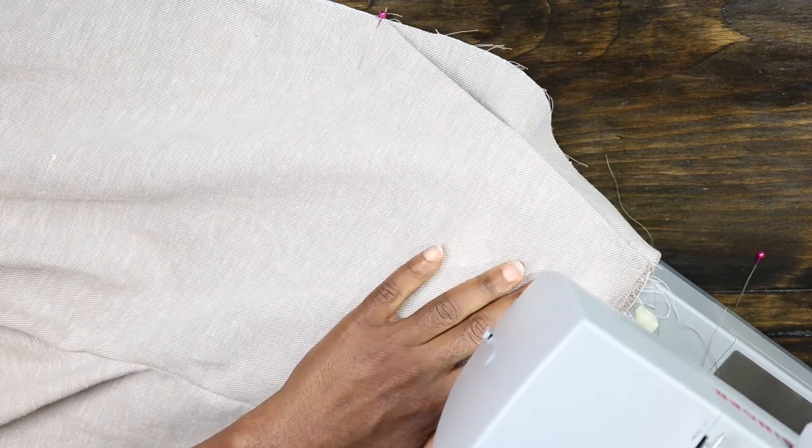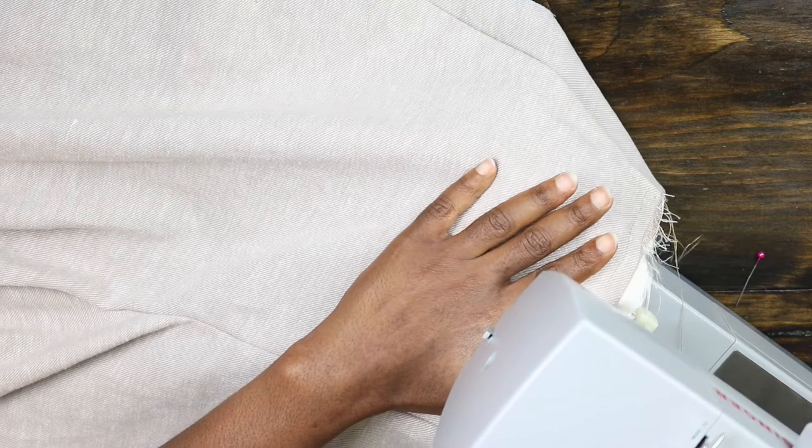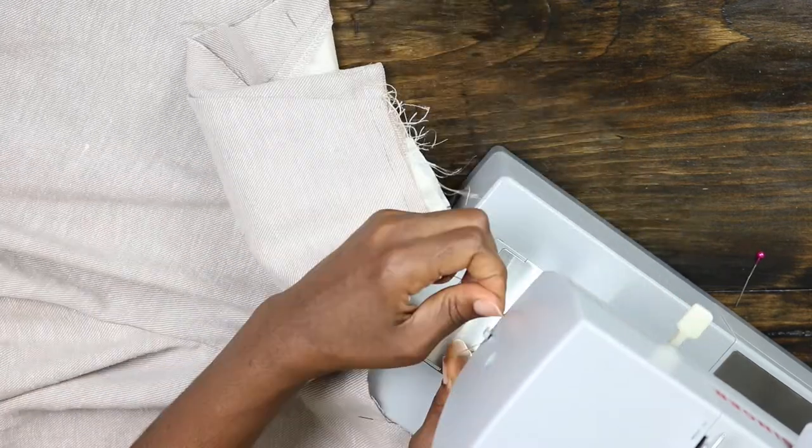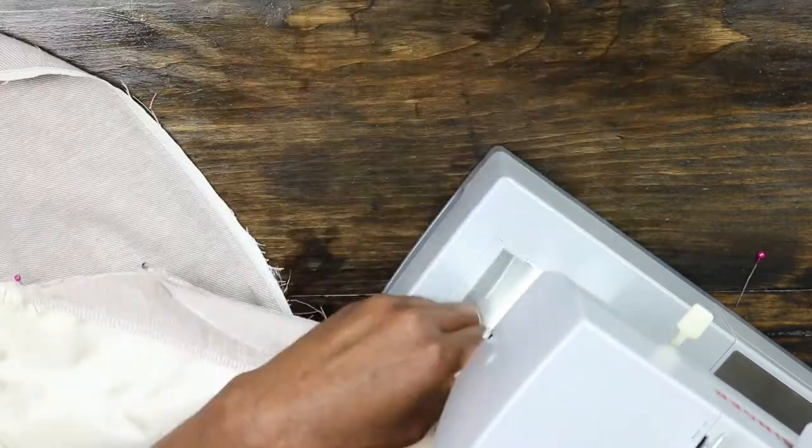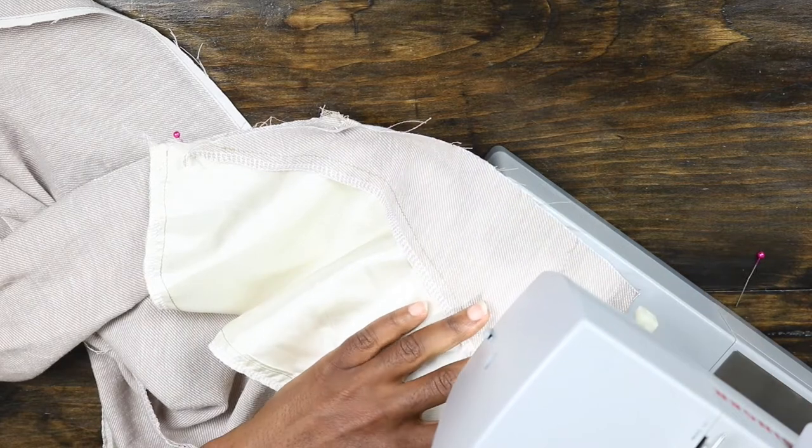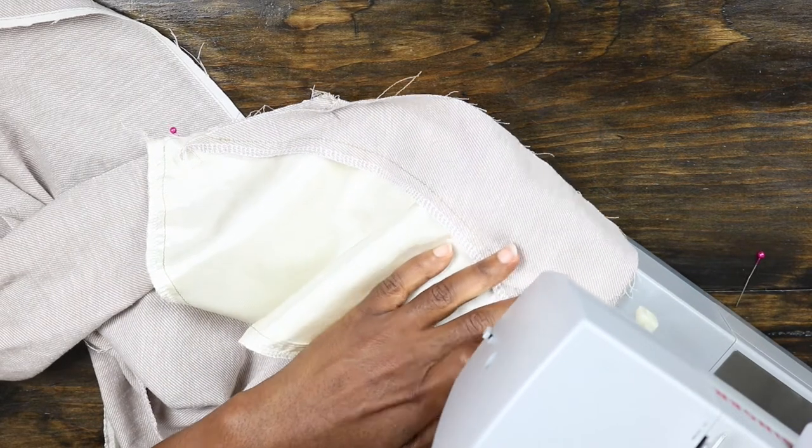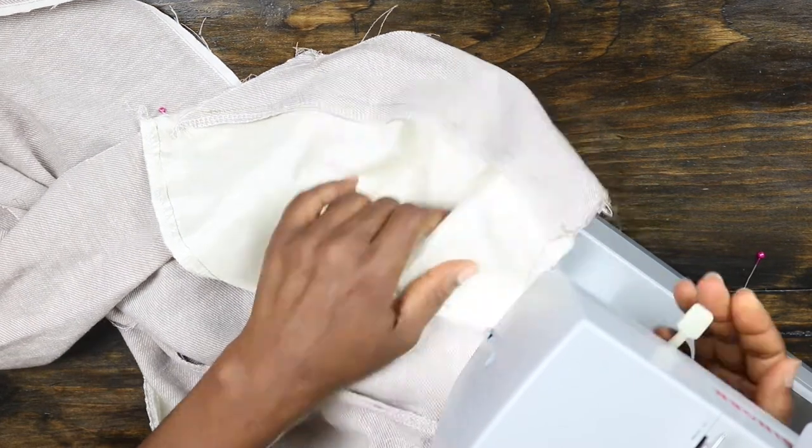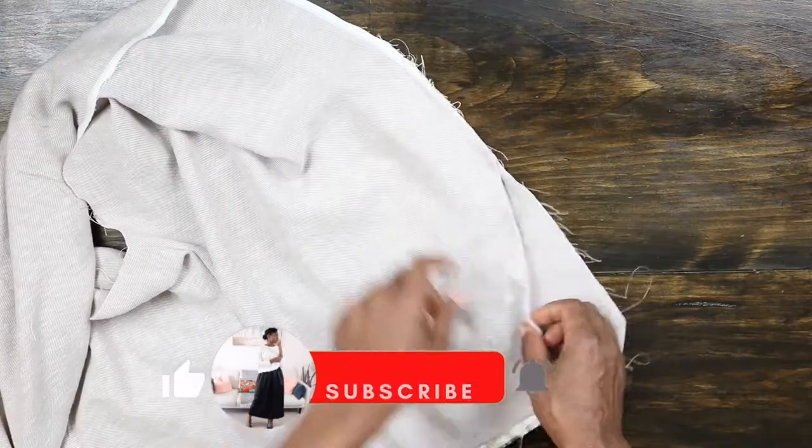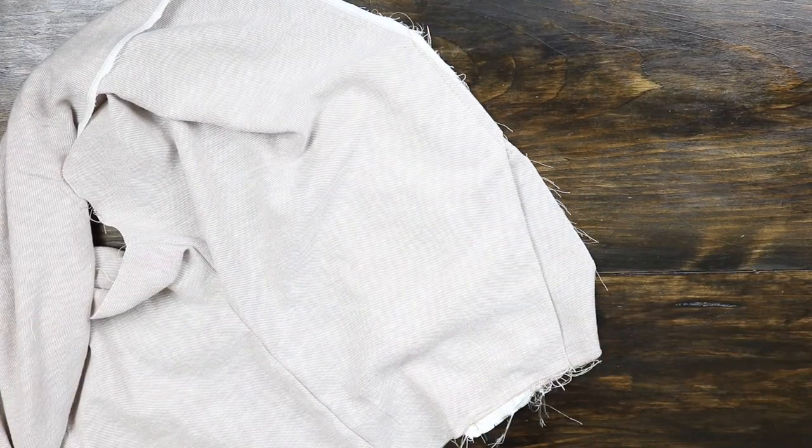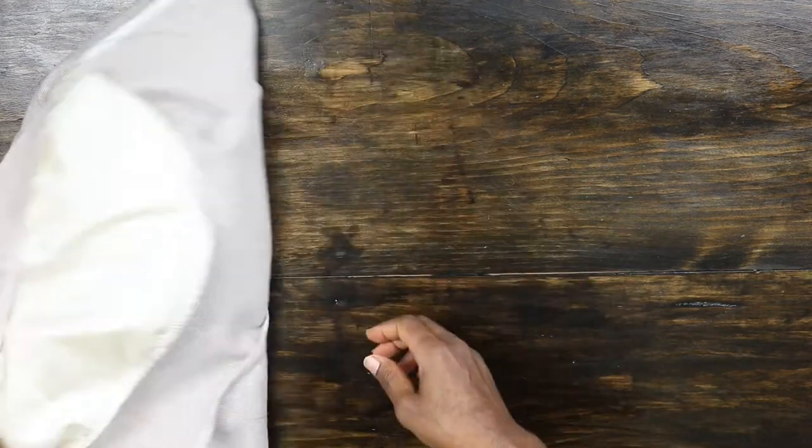Next I went ahead to sew basting stitches to keep the pockets in place when I'm ready to attach it to the back piece of the pants. I didn't want any fights happening between myself and the pocket, as they can be very disrespectful.